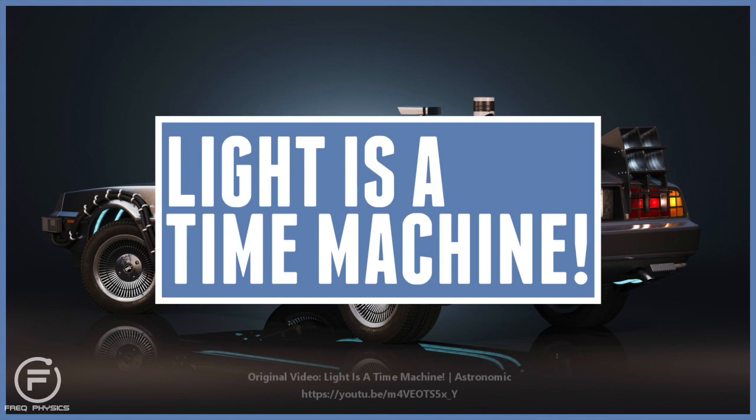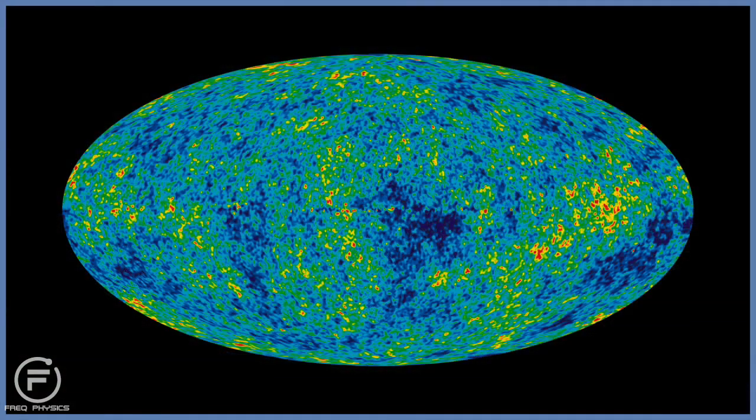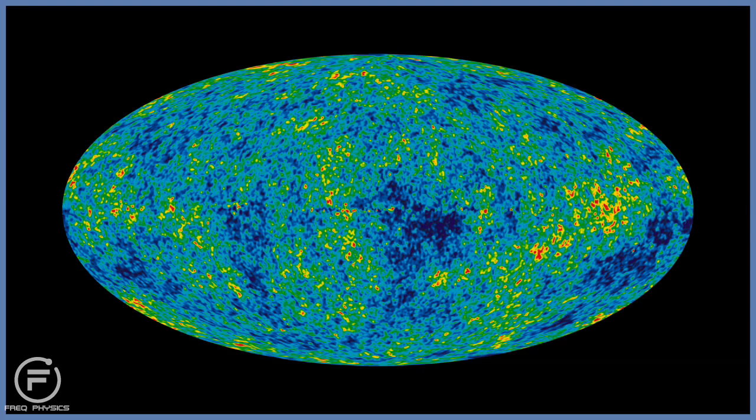Light seems to be everywhere in the universe. It illuminates everything that we can see, and it tells us a lot about the age and the evolution of the universe. The universe tells its incredible story through the medium of light, and of course other wavelengths in electromagnetic radiation.